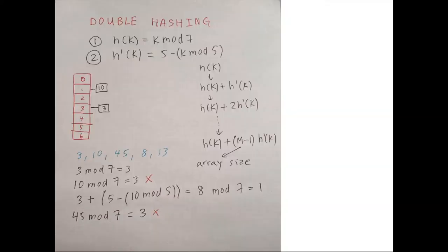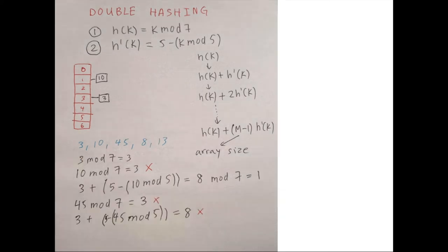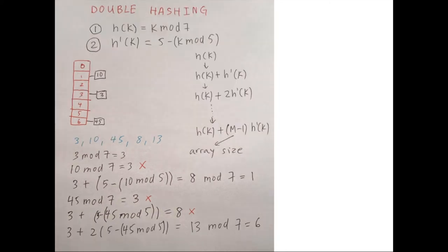Now for key 45: 45 mod 7 is 3 — a collision. Adding the secondary hash function gives 3 + (5 minus 45 mod 5) equals 8, and 8 mod 7 is 1, which is also a collision. So we do 3 plus 2 times the secondary hash function, giving us 13, and 13 mod 7 is 6, which is an unoccupied index.